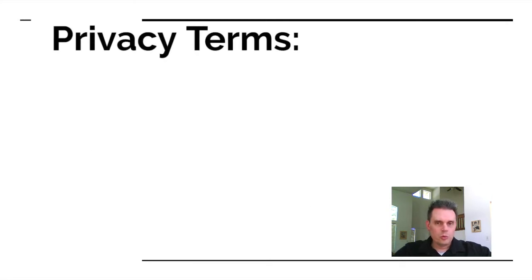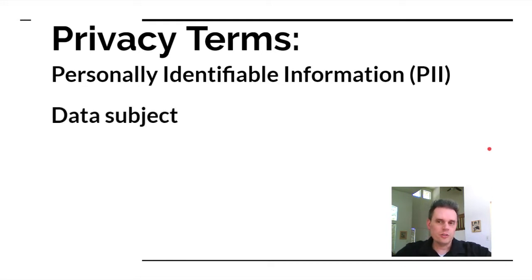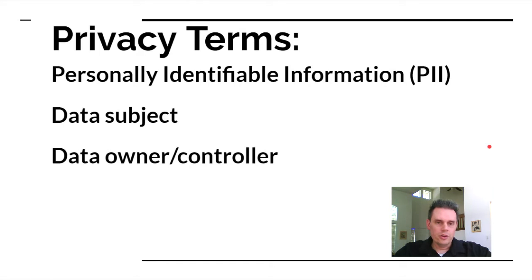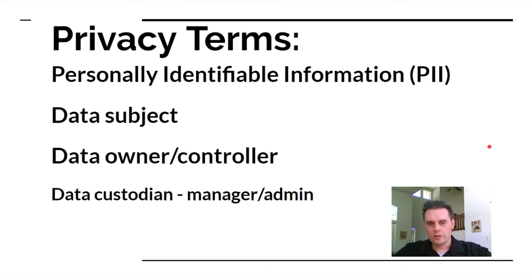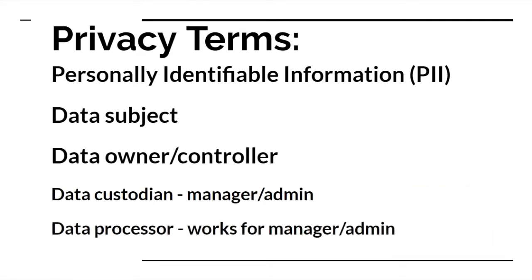Now let's get into some quick privacy terms. There's personally identifiable information (PII), data subject, data owner or data controller, data custodian, data processor, and also data steward — which is presented in a later module but worth introducing here since many of these terms start with 'data' and can be easy to confuse.